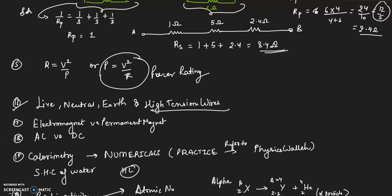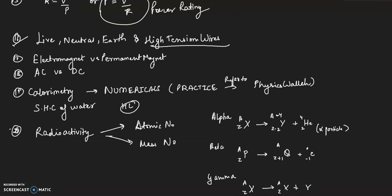Electromagnet versus permanent magnet, the difference between AC versus DC, then calorimetry, the definition of this and then numericals. Please practice a lot in this part because numericals are slightly tough for some students. You can also refer to Physics Wallah videos where he has taught all these numericals. Alexan has taught everything from scratch, so you can refer that video. Specific heat capacity of water and the heat capacity, make sure to learn the definitions.